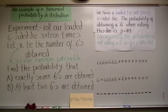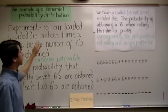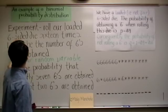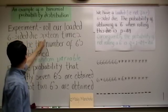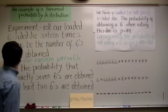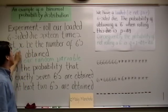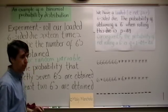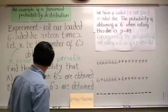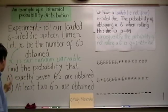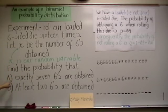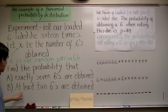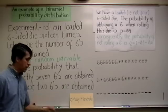Here is our experiment for this example. We are going to roll our loaded six-sided die a total of 16 times. Now, let x be the number of sixes obtained. x is a random variable here. Find the probability that: A) exactly seven sixes are obtained, B) at least two sixes are obtained.